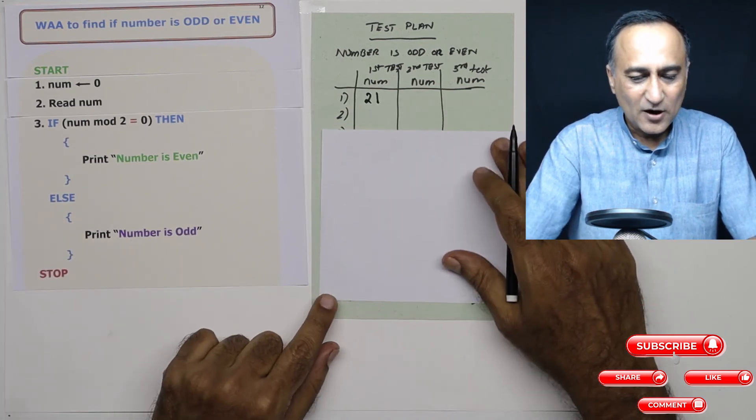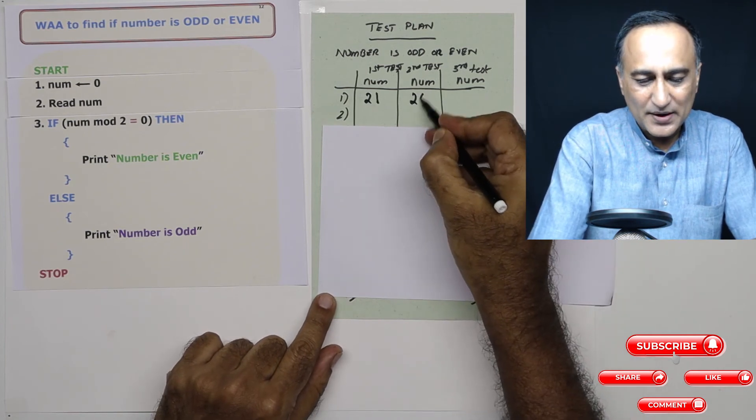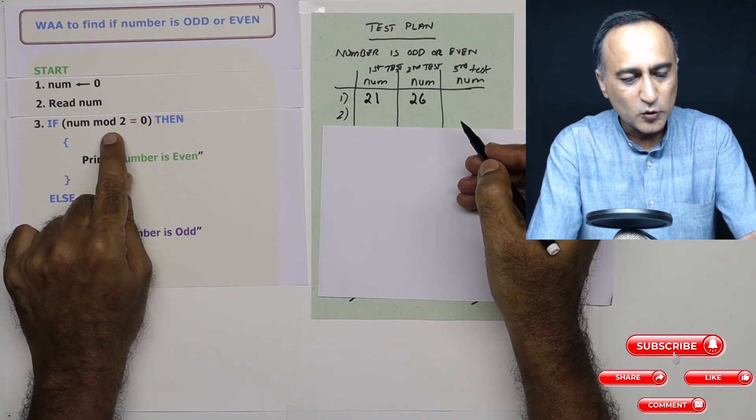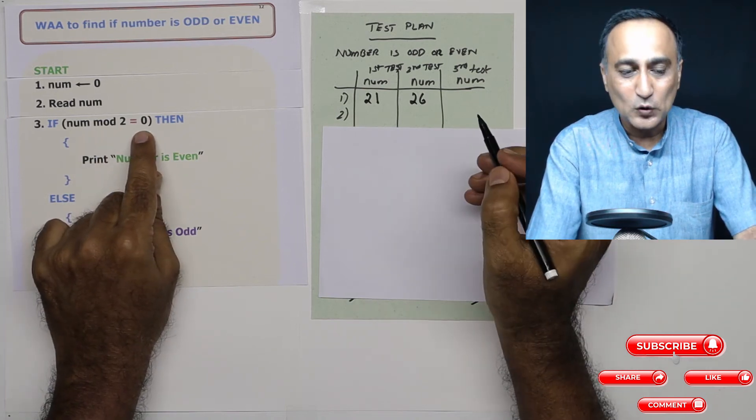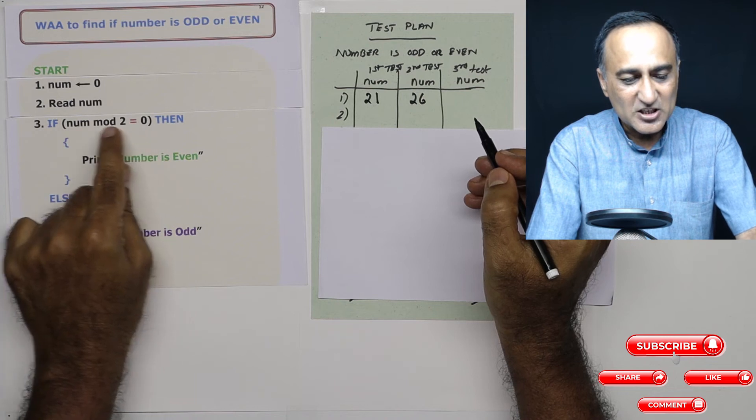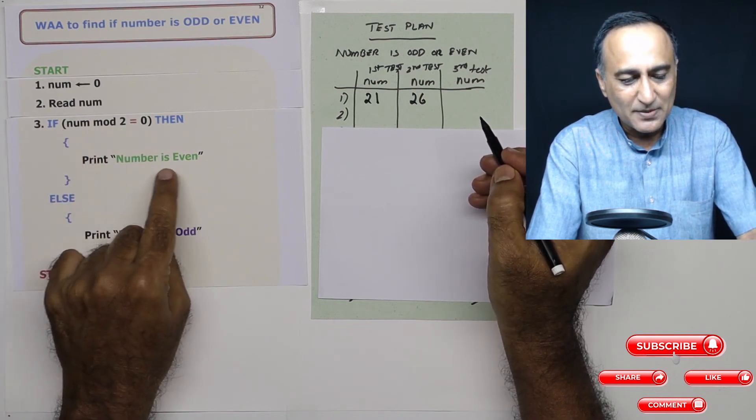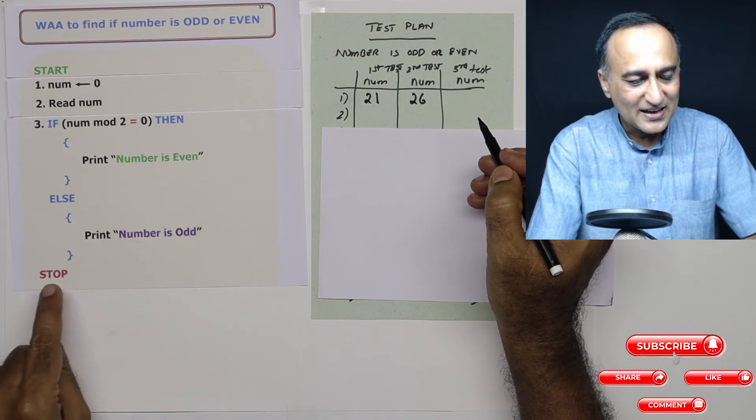All right. Now let's take another number. Let's take the number 26. 26 divided by two or 26 mod two, the remainder is now zero. So this condition becomes true or yes. So I am going to print the message number is even and then come and stop.